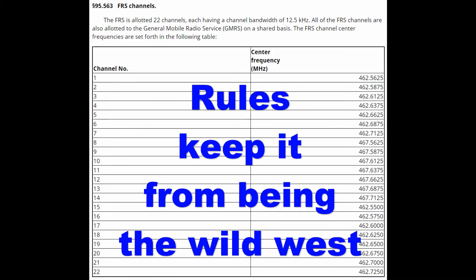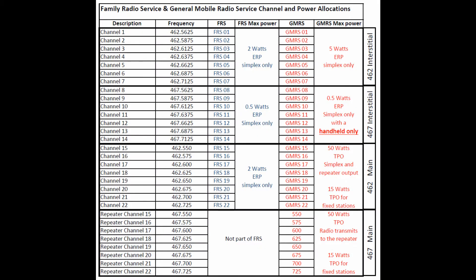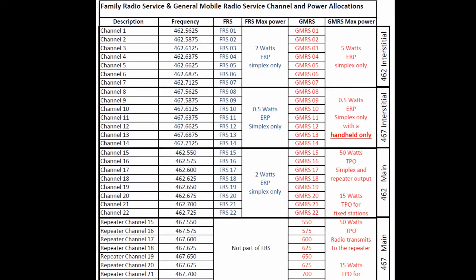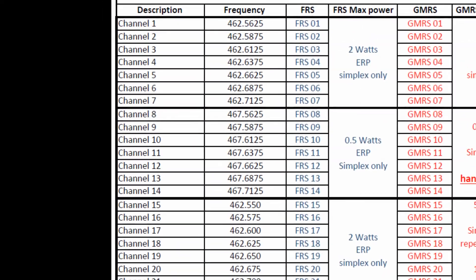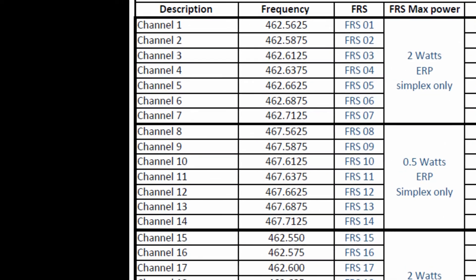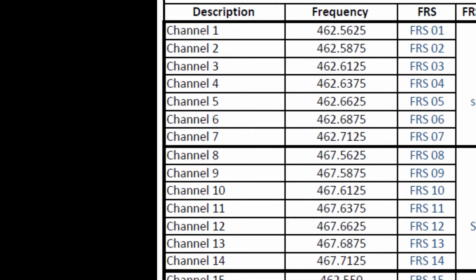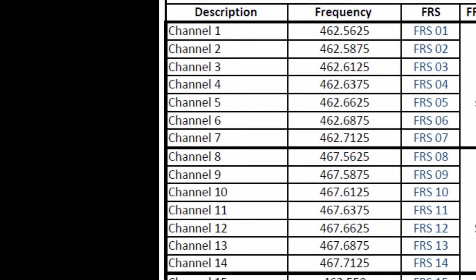We're going to cover channels 1 through 14. Here's a chart I made to hopefully make understanding all the frequencies, channels, and power levels easier. With FRS, don't worry too much about the frequency — but I am going to direct you to look at the decimal point of the frequency. You'll see that the top one has 0.5625 — that five at the end, we'll cover what that means later.